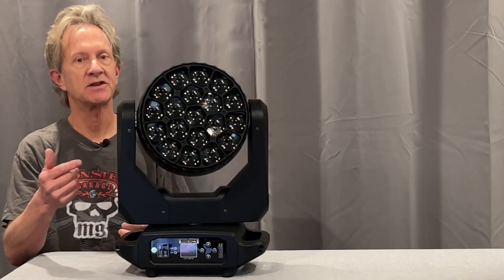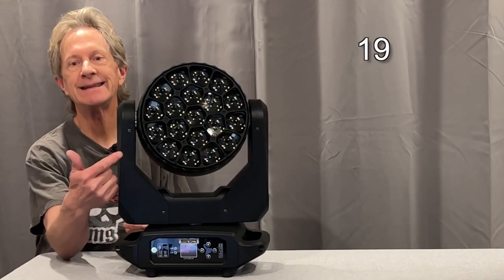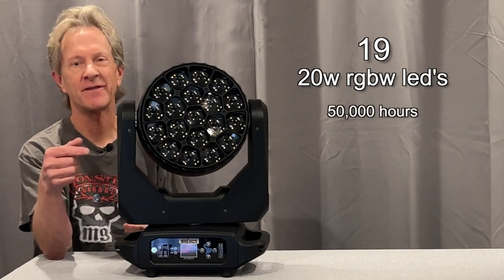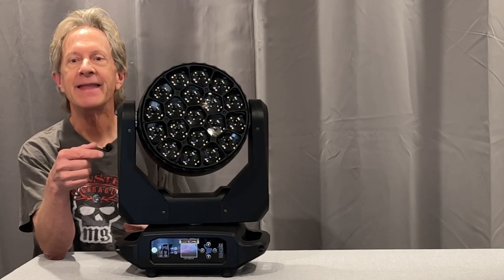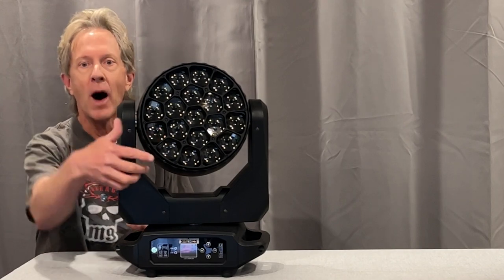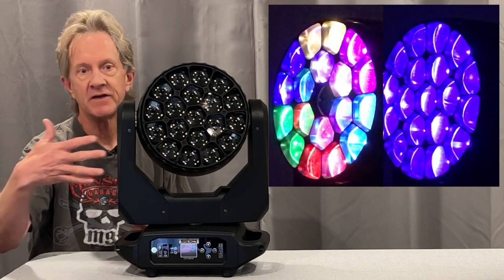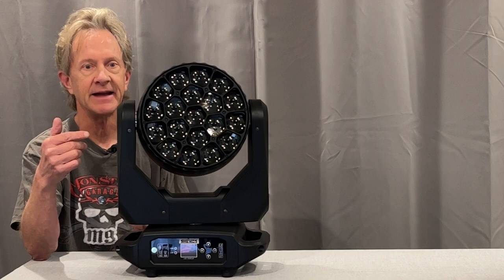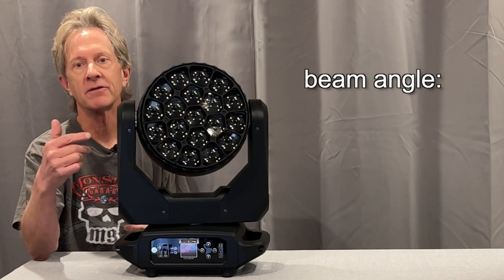The key to its crazy effects are these 19 20-watt RGBW LEDs which Sheds says will last 50,000 hours. They sit behind these hexagonal glass lenses and the optics rotate and move in and out, which affects the distance from the lens to the LED and can change the beam angles from 4 to 45 degrees.